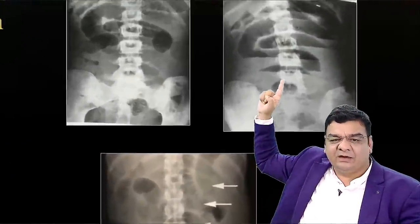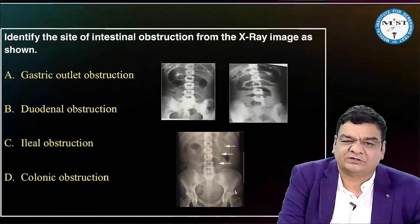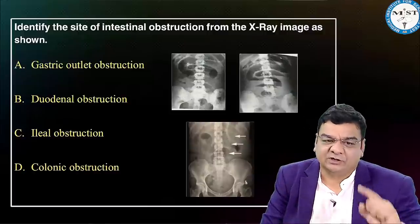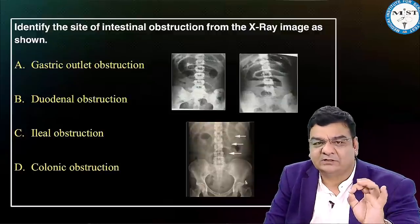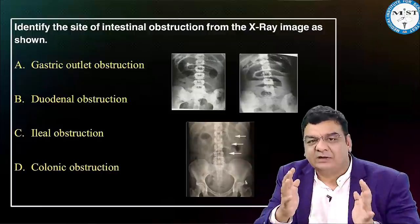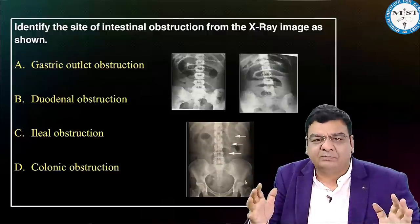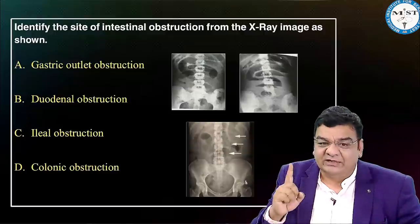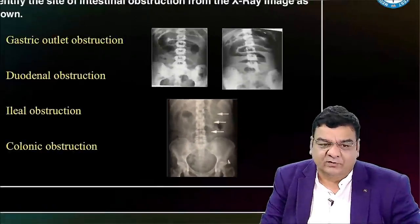Be careful of intestinal obstruction images showing multiple air-fluid levels. Regarding obstruction patterns: single bubble = pyloric obstruction; double bubble = duodenal atresia or annular pancreas; triple bubble = jejunal obstruction; multiple air-fluid levels centrally = small intestinal obstruction; multiple air-fluid levels peripherally = large intestinal obstruction. Also, valvulae conniventes are suggestive of jejunal obstruction. You might get a straight single liner, image-based question, or clinical scenario of intestinal obstruction.